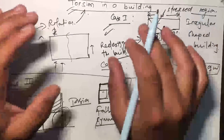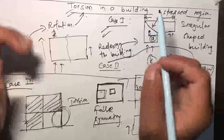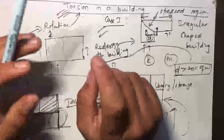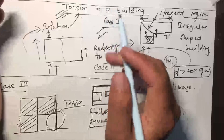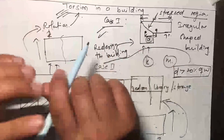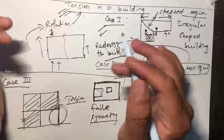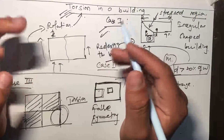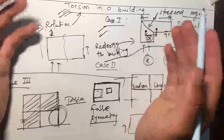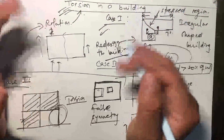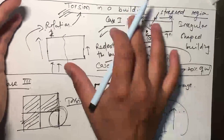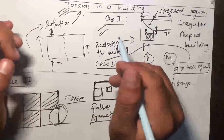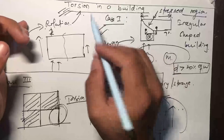If torsion is not considered while designing the building, there may be severe damages. You must always consider torsion in a building while designing it. That's all for this video — hope it was helpful. Thank you for watching and take care.